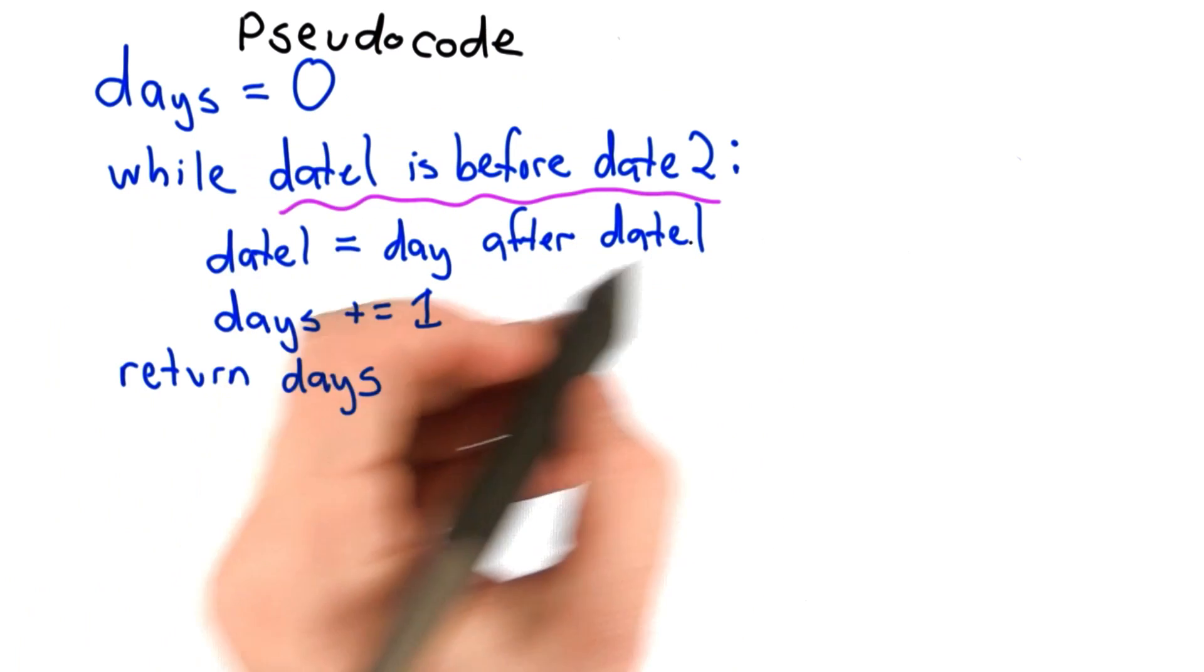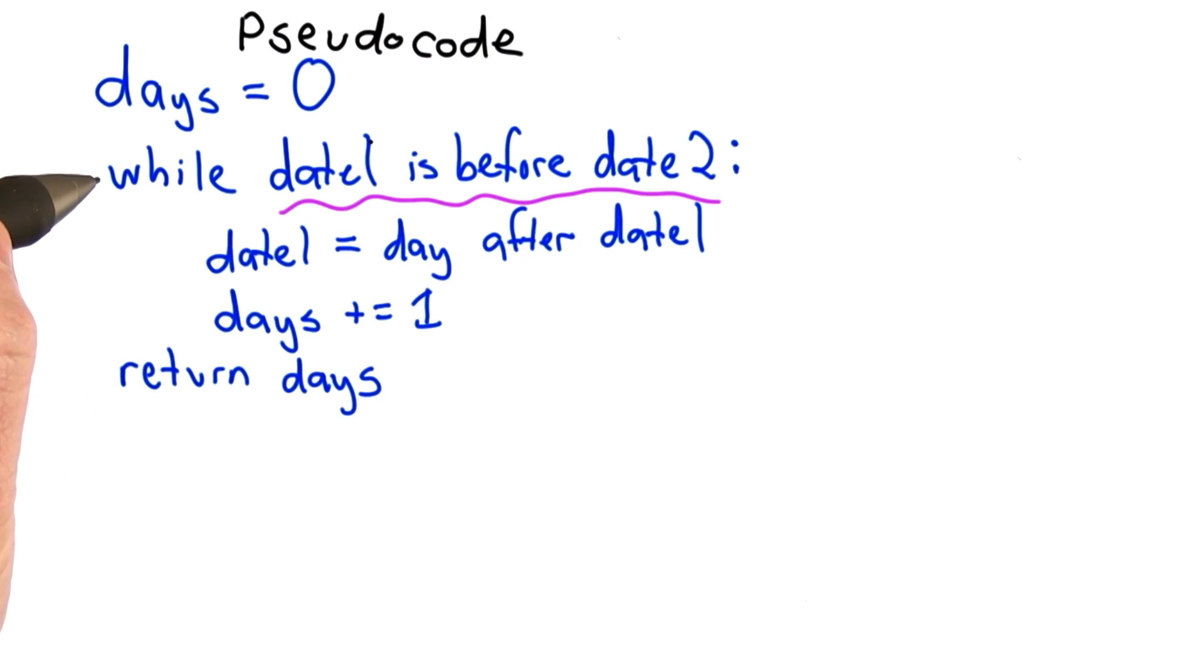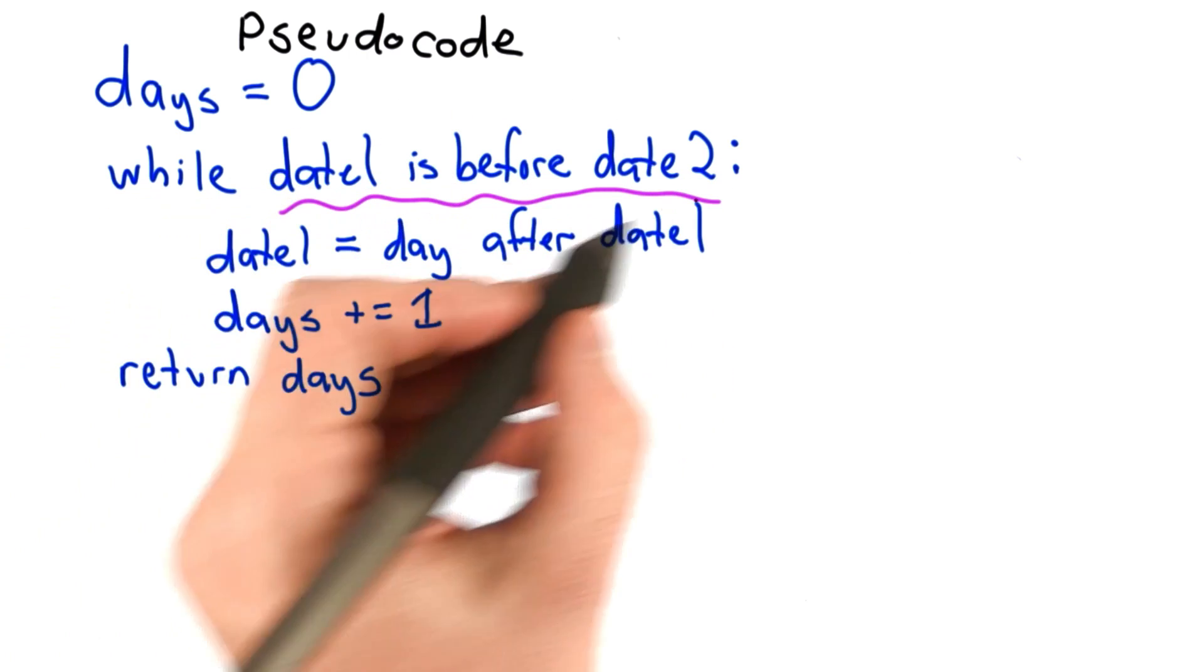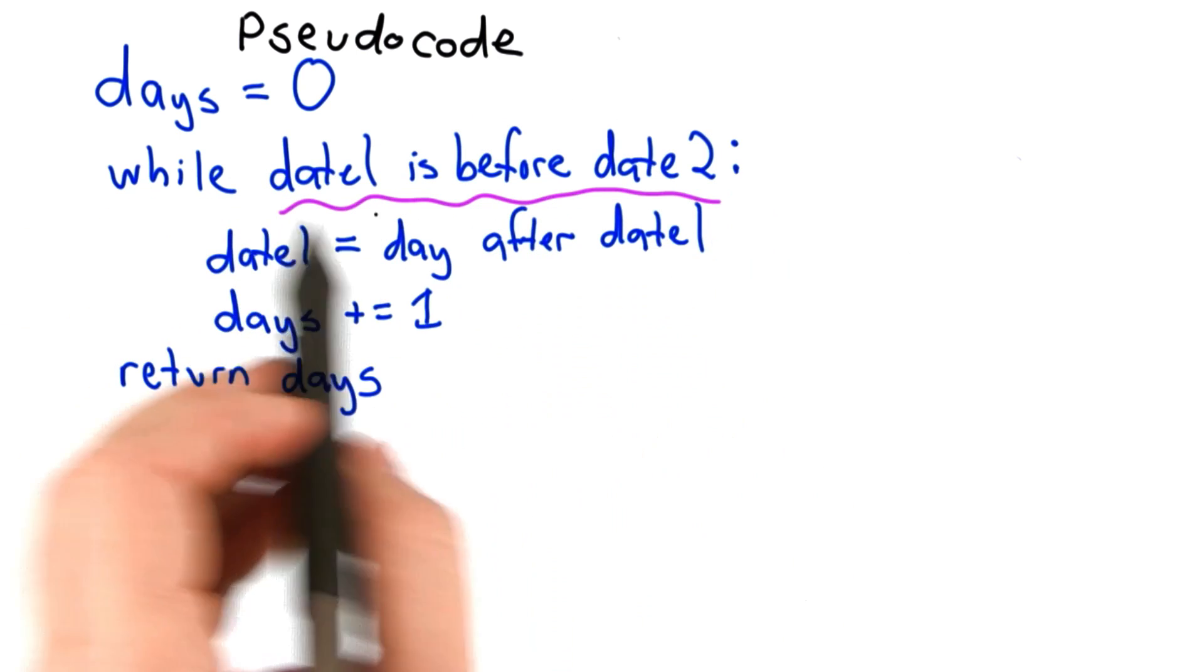So to answer this, let's think about the pseudocode we had before. We have this while loop where we need to know, as the stopping condition, if date 1 is before date 2.